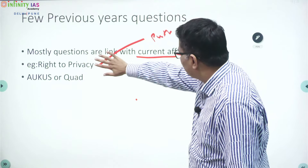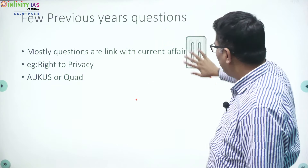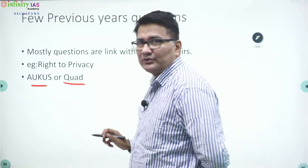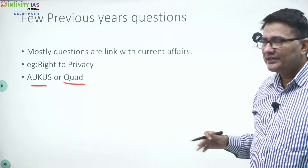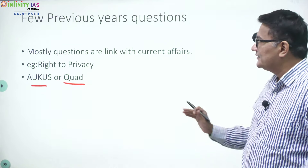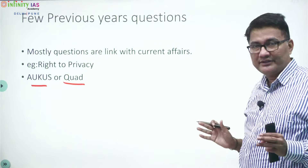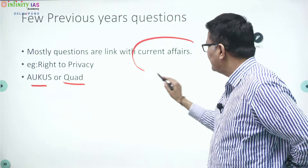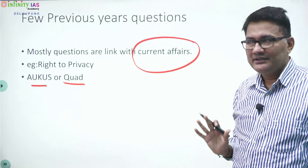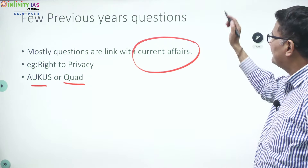Let us check another example — Quad or AUKUS. Both are in the news for the last one year, so you can expect these questions in coming papers. That means if you study a few books and link those things with current affairs — which you are anyway going to prepare for GS — you will score very well in political science.